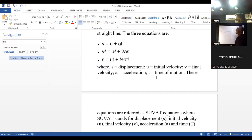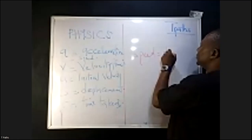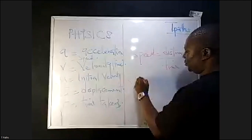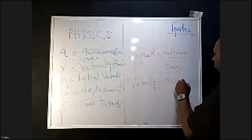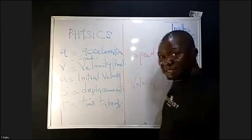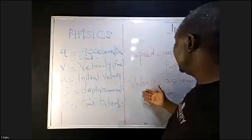But speed is a scalar quantity while velocity is a vector quantity. Speed is defined as distance all over time. While velocity is displacement all over time. You can see the difference between speed and velocity.